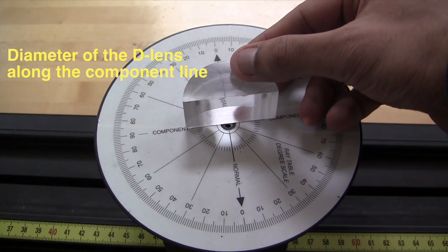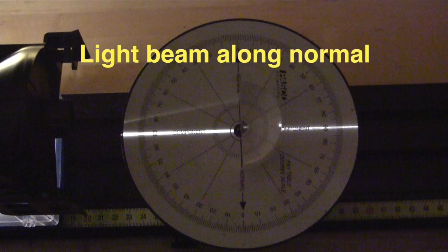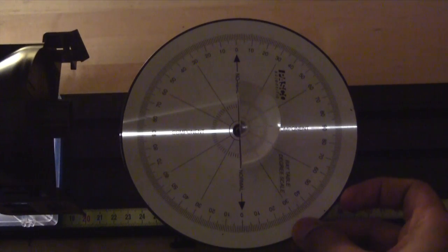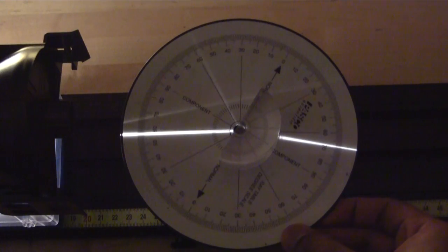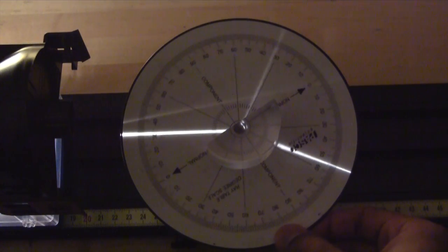To get the index of refraction, make sure that the diameter of the semicircle is lined up with the component line and the light beam passes through the center of the semicircle. Then turn the ray table to different positions and each time measure the angle of refraction and use Snell's law to determine the index of refraction of acrylic.